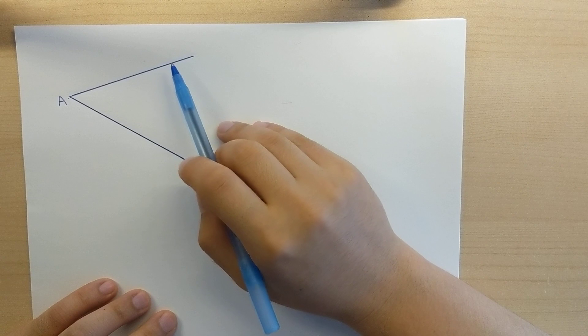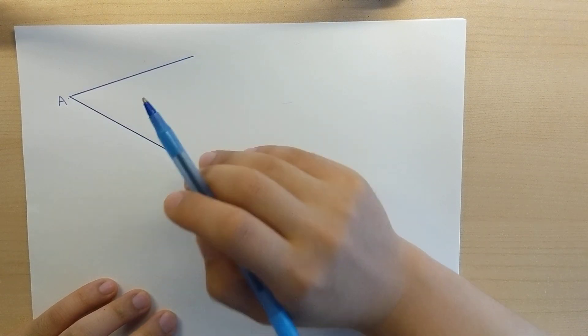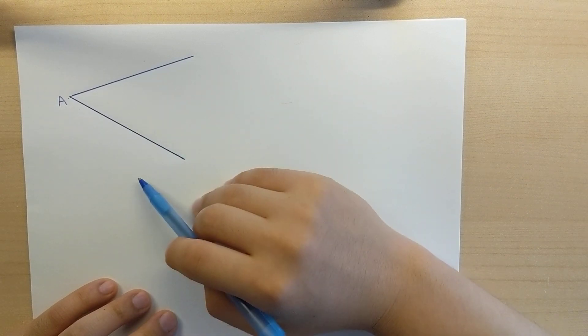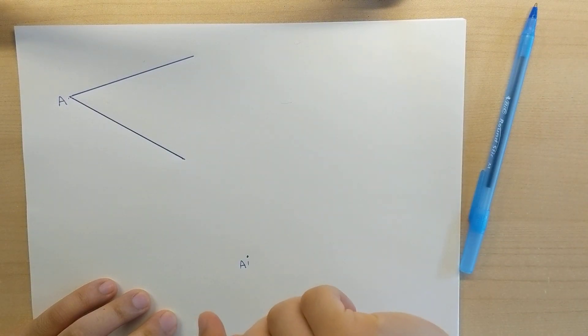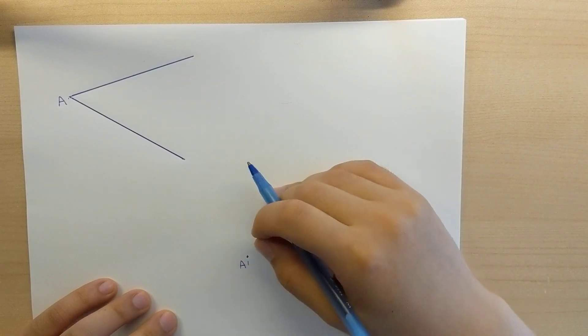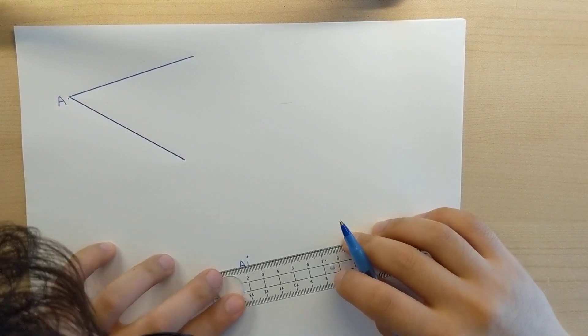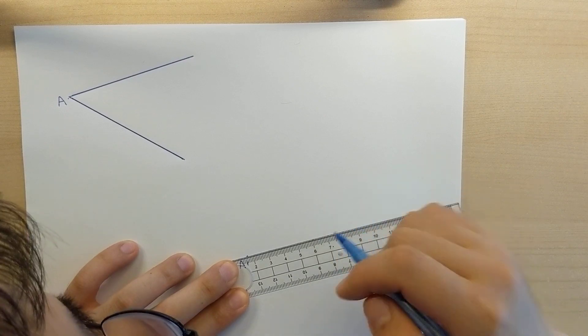Because of this, we really do not need to copy the actual length of that angle. All we need to do is copy the opening. So because of this, what we're going to do is I am going to draw a line passing through A prime here at some random length.